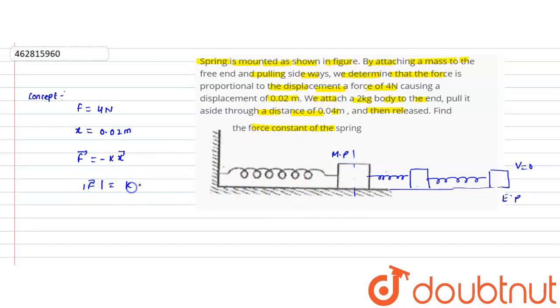The magnitude of force equals k times the magnitude of x. The spring constant or force constant k equals F upon x, that is 4 upon 0.02.